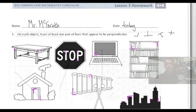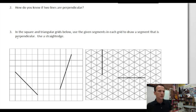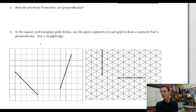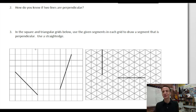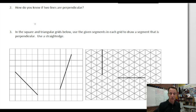Now here we are at number two, asking us: how do you know if two lines are perpendicular? Well, one reason can be is if it's a mathematical given — if I draw two lines, as sloppy as they might be, and I say those are perpendicular, then that is a geometric given. But really, they're asking us here for the definition of perpendicular.